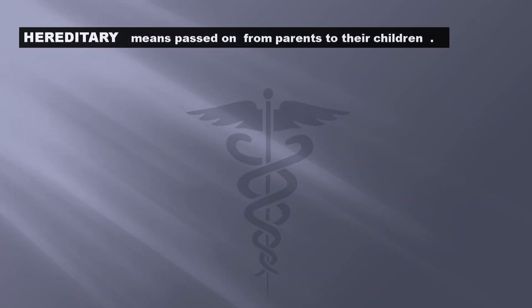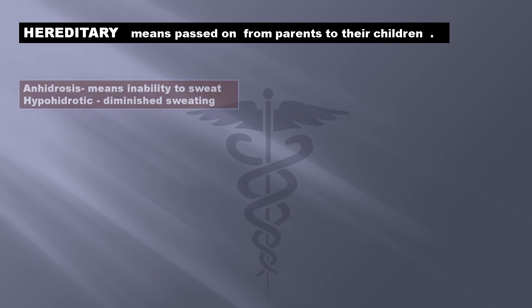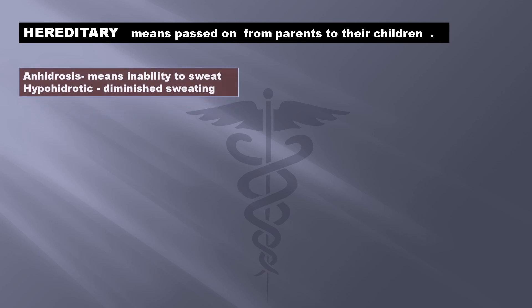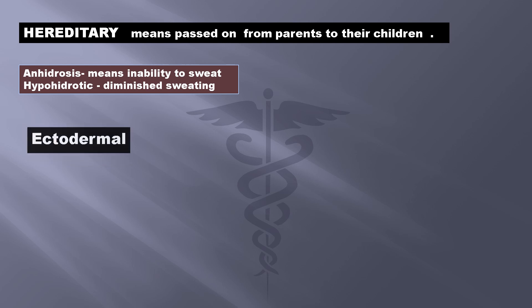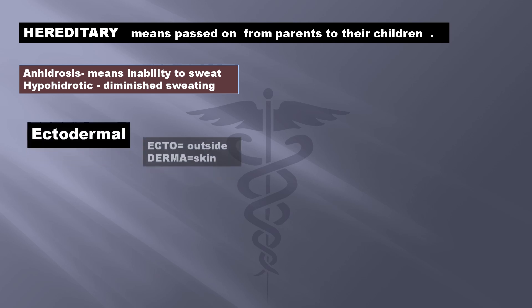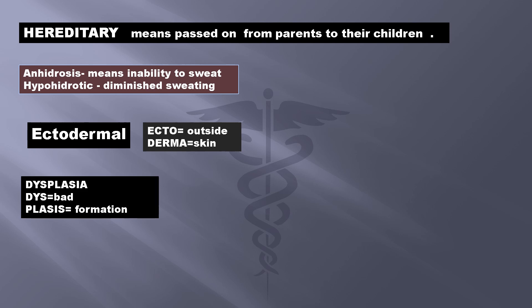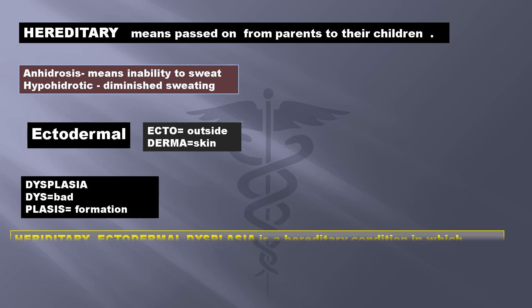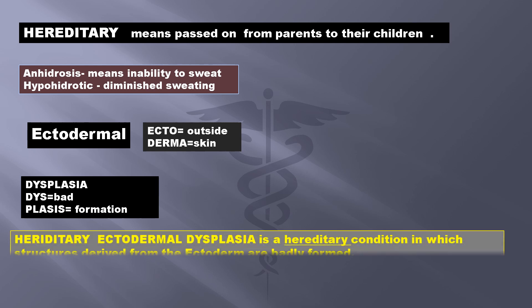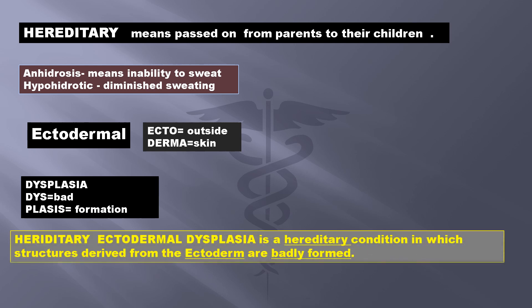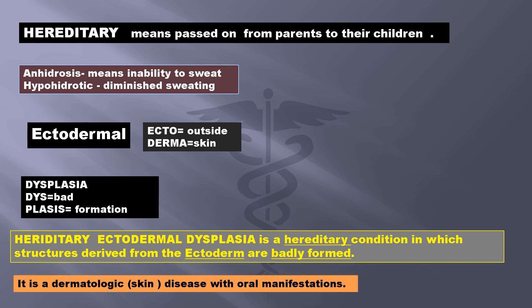Hereditary means passed on from parents to their children. Anhydrosis is the inability to sweat and hypohydrotic means reduced sweating. Ecto means outside and derma in Greek means skin. Dysplasia — dys means bad, and lases in Greek means formation. So hereditary ectodermal dysplasia is a hereditary condition in which structures derived from the ectoderm are badly formed. This is a dermatologic or skin condition and it has oral manifestations.